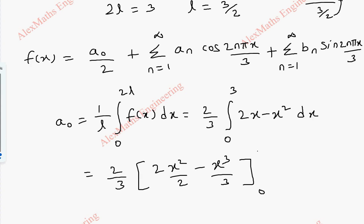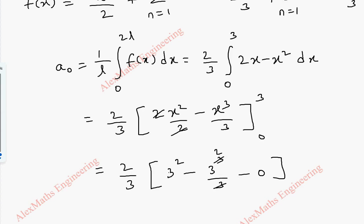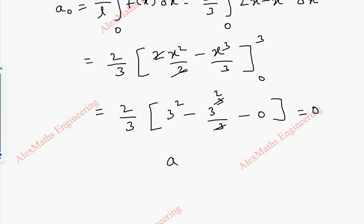Our limit is from 0 to 3. We can cancel the 2s. Now substituting the upper limit 3 in place of x, we get 3 squared minus 3 cubed by 3. When we put the lower limit, everything is 0. After cancelling, this is 3 squared, so 9 minus 9, which is 0. So totally we get a0 as 0.